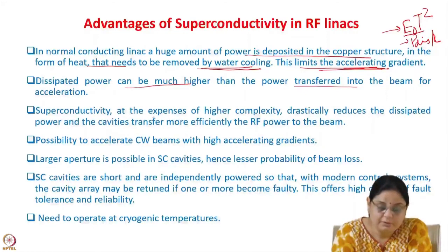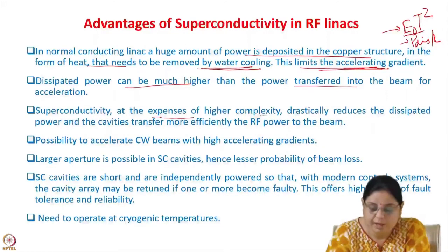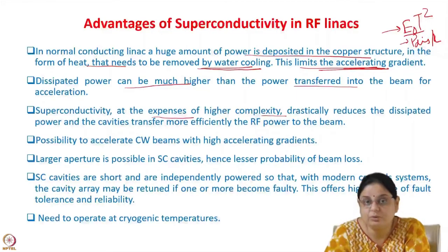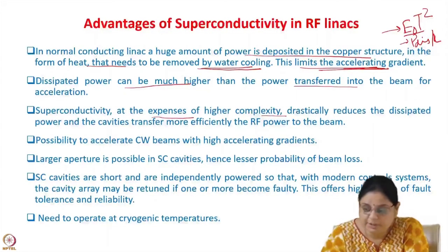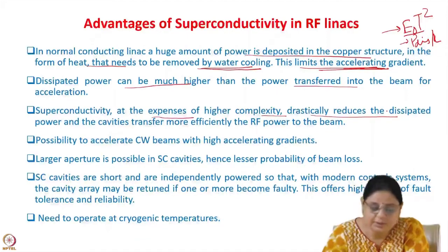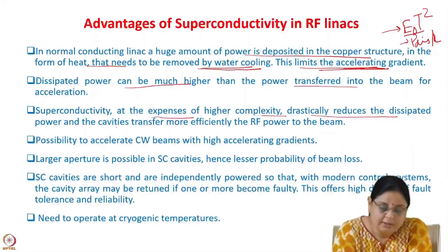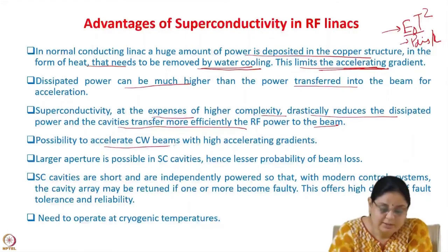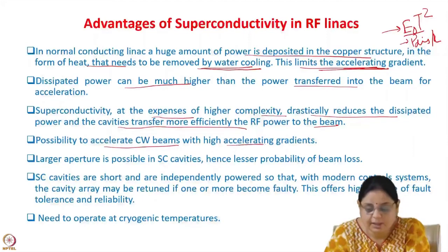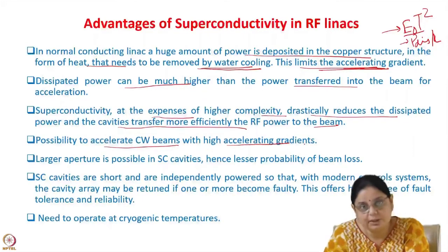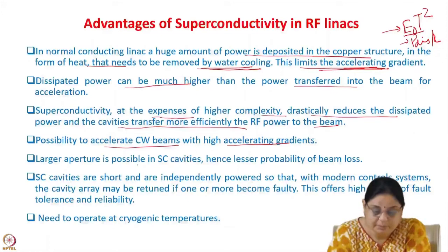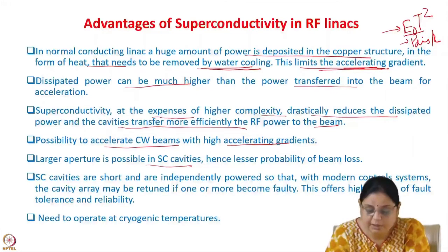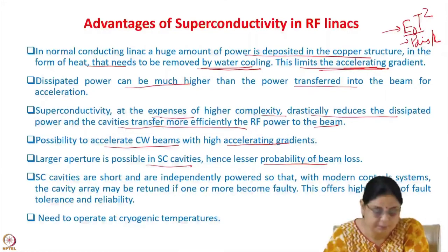Superconductivity, at the expense of higher complexity — since the system must be cooled to cryogenic temperatures — drastically reduces the dissipated power, and the cavities transfer RF power to the beam more efficiently. There is a possibility to accelerate CW beams with high accelerating gradients in a superconducting cavity. A larger aperture is also possible in a superconducting cavity, reducing the probability of beam loss.